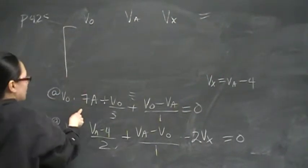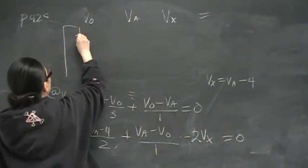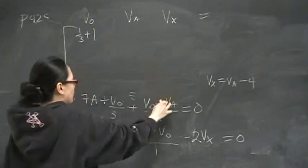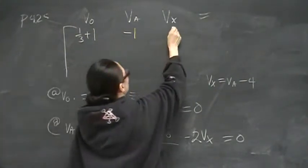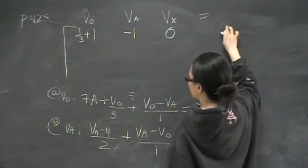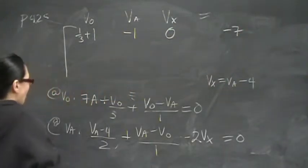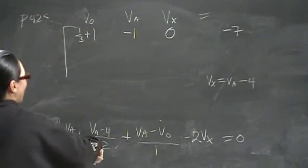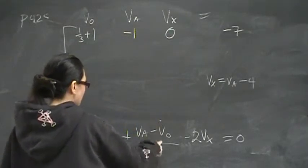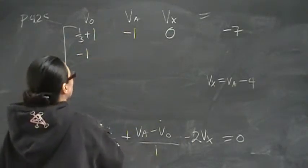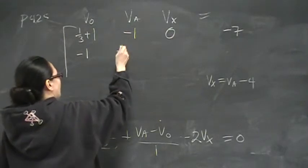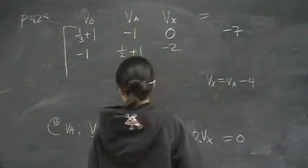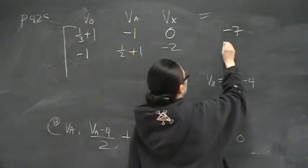From equation 1, all my coefficients for Vout are 1/3 plus 1, and all my coefficients for Va is negative 1, and my coefficient for Vx is 0. I have no Vx in there, so the coefficient is 0, and the constant is negative 7. On the node voltage at Va, I have my coefficient for Vout is negative 1. My coefficient for Va is going to be 1/2 plus 1, and then my Vx is negative 2, and my constant is going to be positive 2.